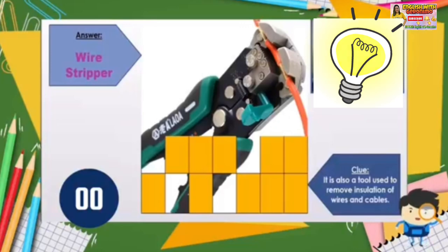We have: the first three are types of pliers — the first one is the combination pliers, second is side cutting pliers, and we can also use long nose pliers if they have a cutter in them. Then we have the wire stripper, and the last one is the electrician's knife.